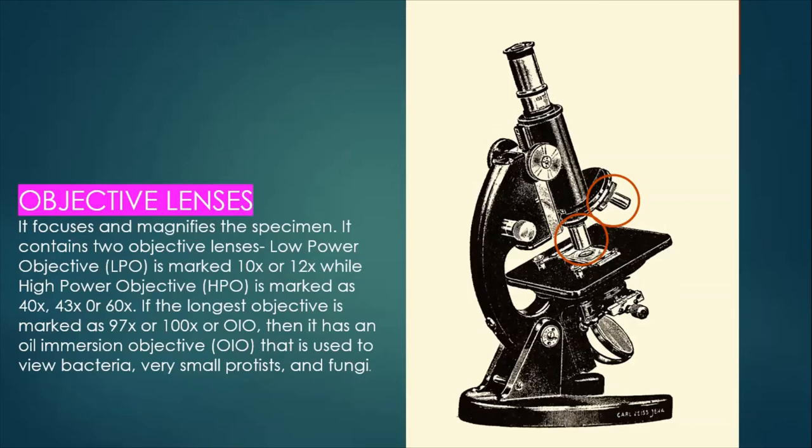While high power objective is marked as 40x, 43x or 60x. If the longest objective is marked as 90x or 100x, or OIO, then it has an oil immersion objective that is used to view bacteria, very small protists, and fungi.